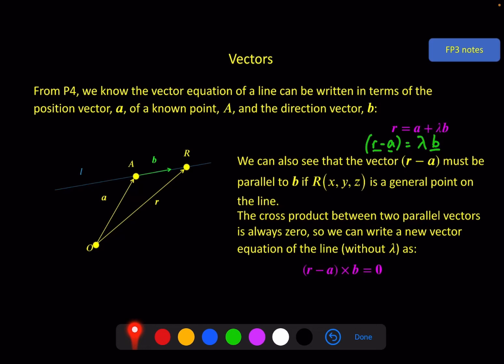Which lets us write down a vector equation of the line without using lambda. And then of course we can just expand that out and bring the -a × b to the other side and we can write it like this. So you might be asked to use this vector equation of a line, but you might just as easily be asked to use this one or this one. Notice if you know a and b for this one, then there's no difference here. A and b are your defining elements of the line whichever form you're using for the equation.